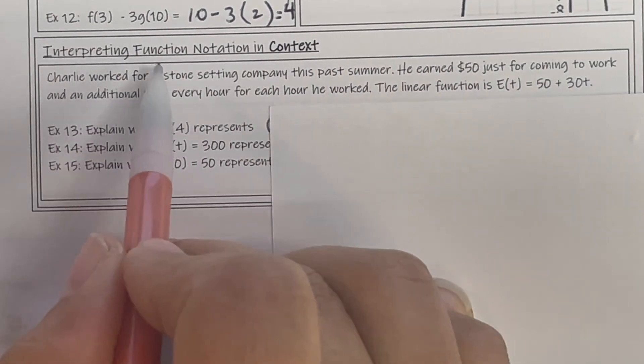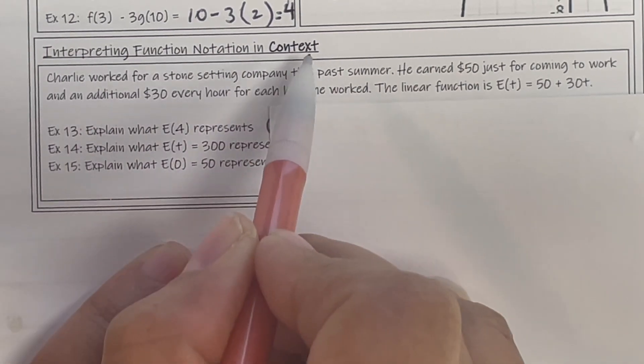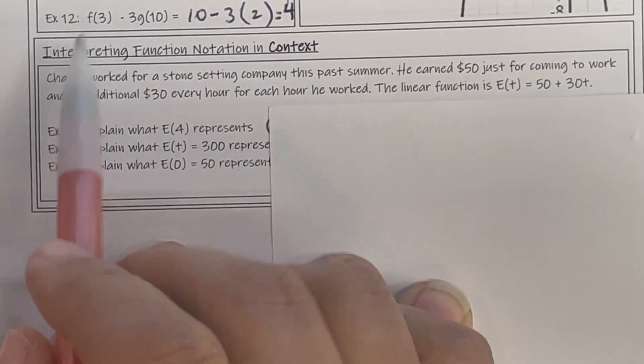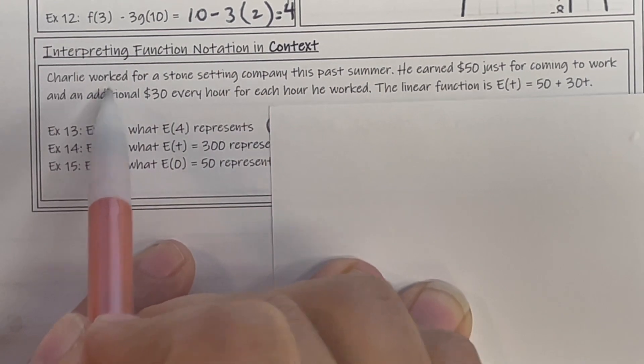We're going to take a look at interpreting function notation in context, really just understanding what's going on in the question. The best way to do this is just put yourself in the situation.